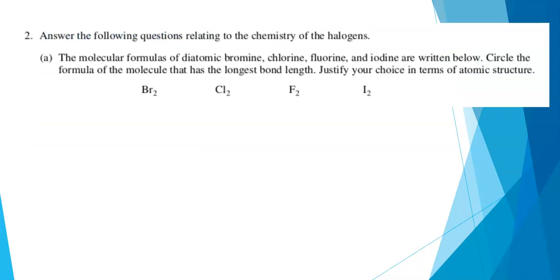Question number two was all about the chemistry of the halogens. We start with the molecular formulas of the diatomic halogen molecules, bromine, chlorine, fluorine, and iodine. And the question says, circle the formula of the molecule that has the longest bond length and justify your choice in terms of atomic structure. So longest bond length. We're talking about the distance between the nuclei in the molecules. They're all halogens. They're all in the same family. And the answer is that it's iodine.